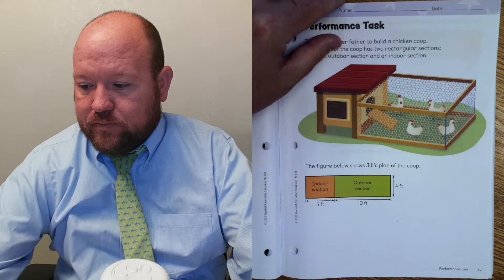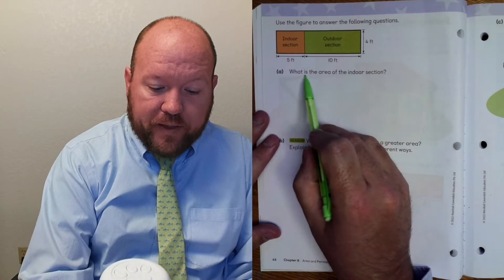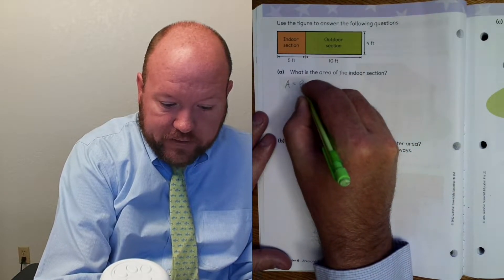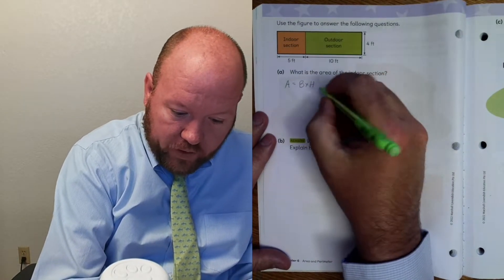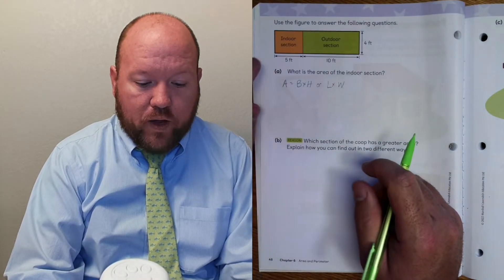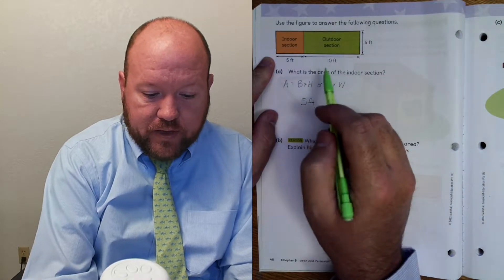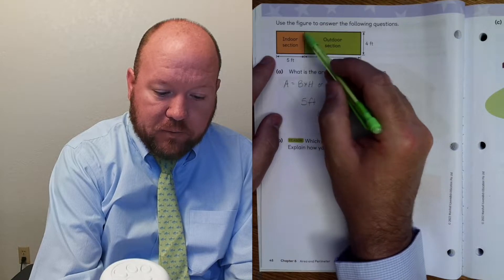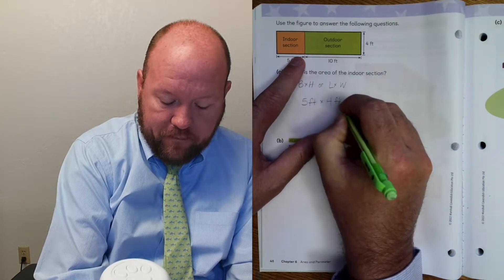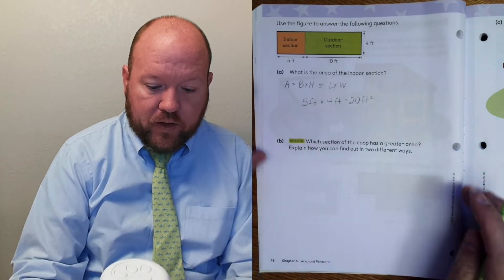Now let's turn over to page 48. So first we want to find the area of the indoor section. Remember that area of a rectangle equals either base times height or length times width. What is the base? The base is five. And what is the height? From the bottom to the top. So we don't know this measurement here exactly, but we know that all these sides are equal on a rectangle and so it's four. So five times four is twenty. Feet times feet is feet squared. So it's twenty square feet.